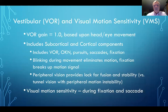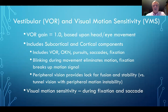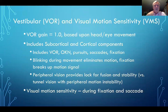The VOR gain needs to be 1.0 so that when I'm moving my head back and forth, both visual and head motion are in the same place — integrated so everything is seen as sharp and clear with head movement. This includes both subcortical and cortical components: the VOR includes OKN, pursuits, saccades, and fixation. In an infant, pursuits and saccades are not fully developed, so the VOR is primarily subcortical. As an infant develops pursuits and saccades, that overrides the system and allows you to get a gain of 1.0.